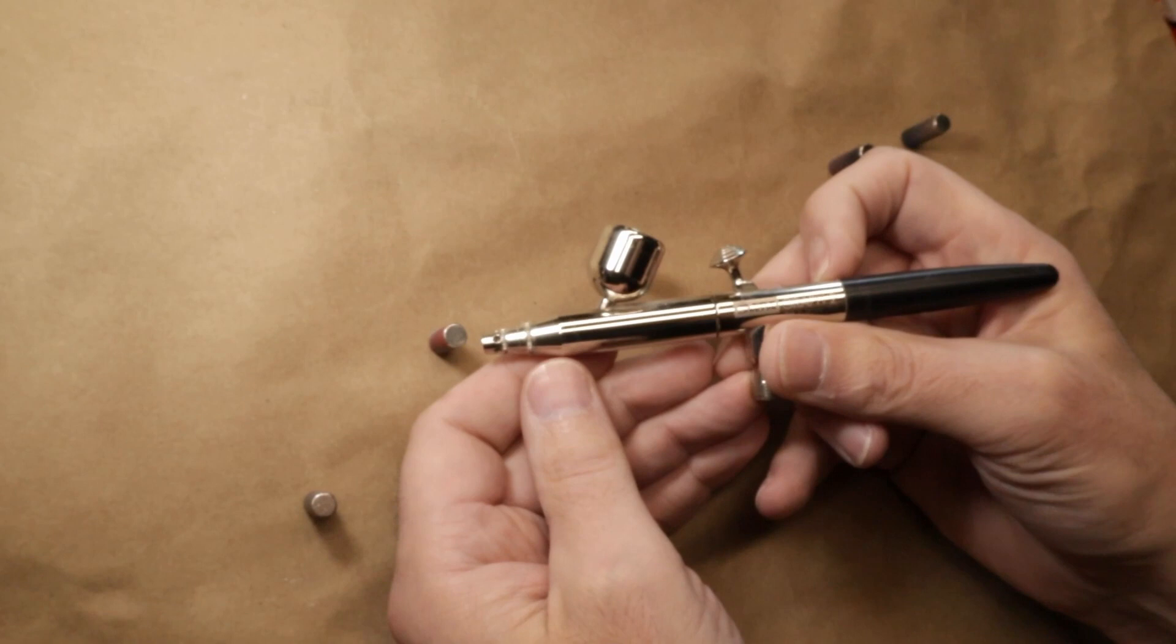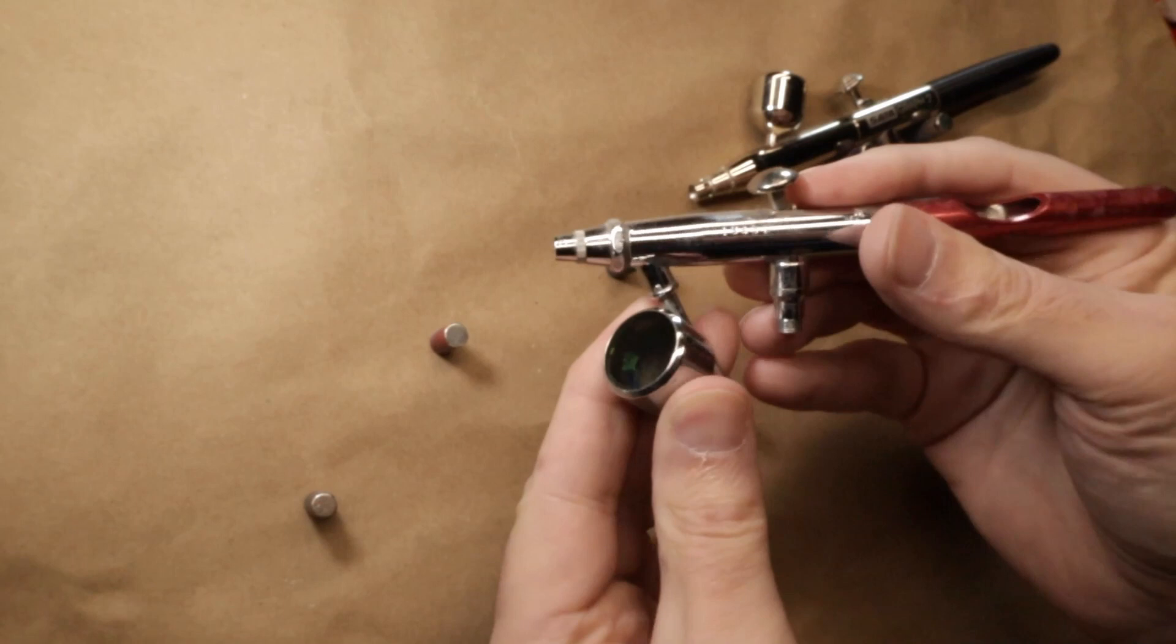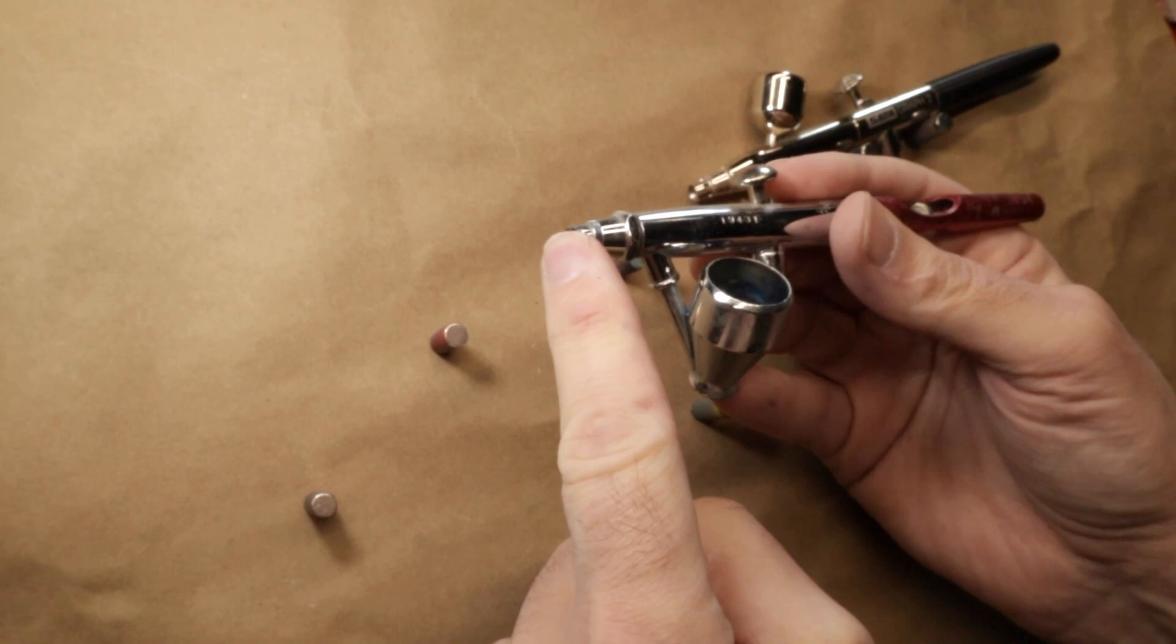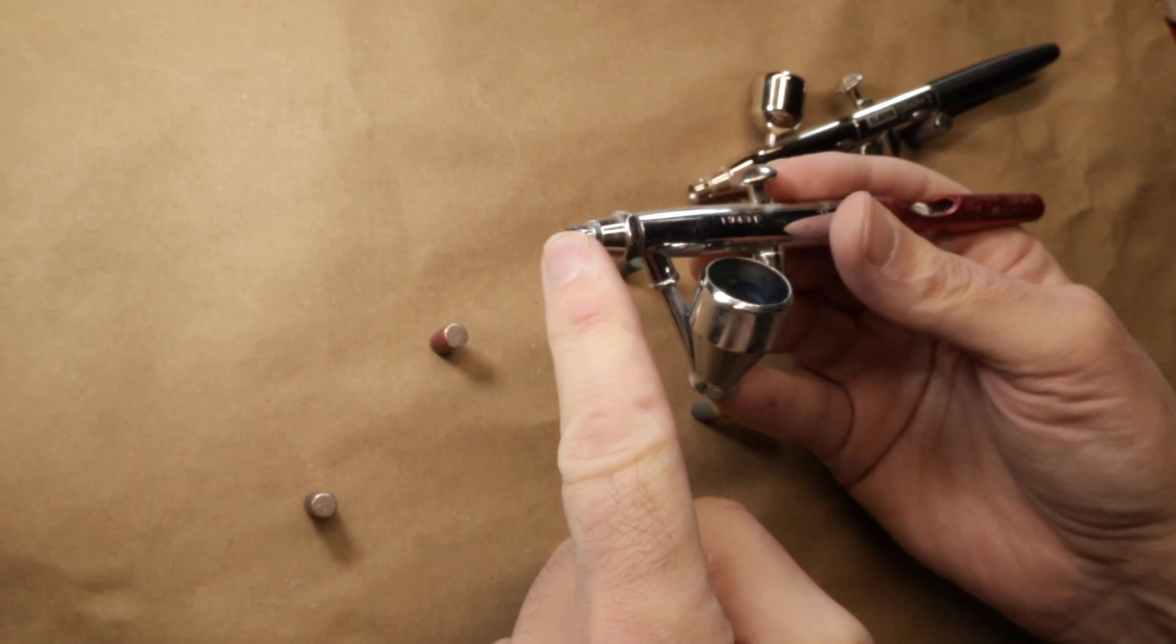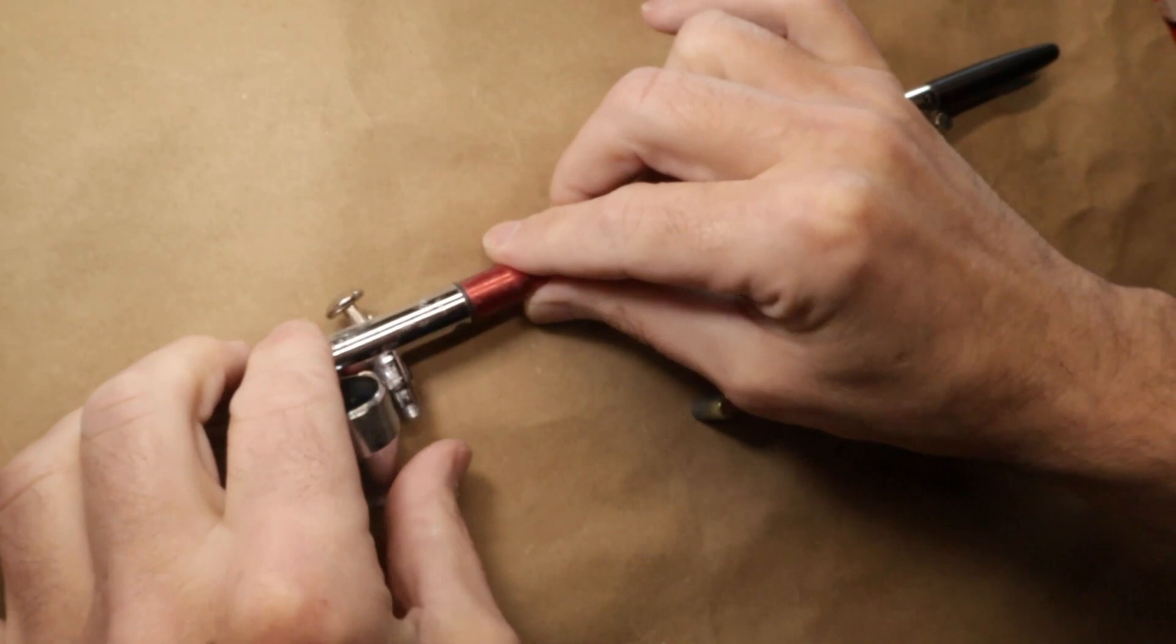The next guy is a siphon feed and the siphon fed brushes have the reservoir at the bottom. Now what's nice about the siphon feeds is they usually have different bottles and cup configurations that you can get for them. But what happens with this is the vacuum that's created is what draws the paint up into this airbrush and that's how it works. The trigger action again is exactly the same - it's pushed down for air and pull back for paint - but the way that paint is pulled up through this brush plays a little bit different role.